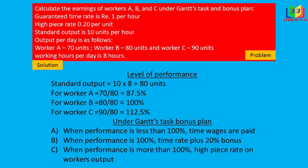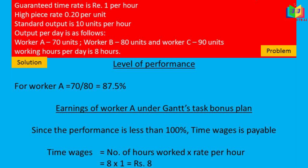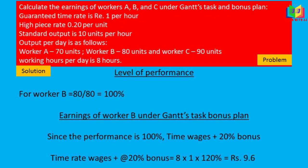Worker A's performance is less than 100%, so only time wages are payable. Worker B's performance is 100%, so time wages plus 20% bonus will be paid. Worker C's performance is more than 100%, so high piece rate will be paid. For Worker A: time wage = 8 hours × ₹1 per hour = ₹8.